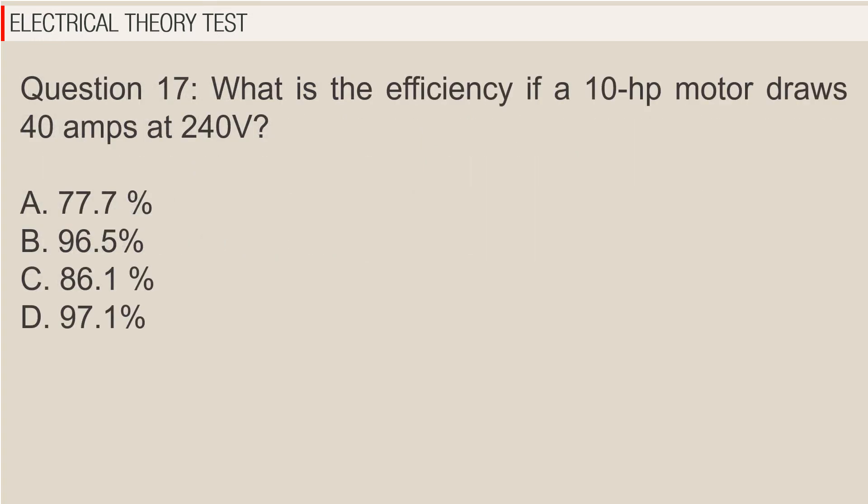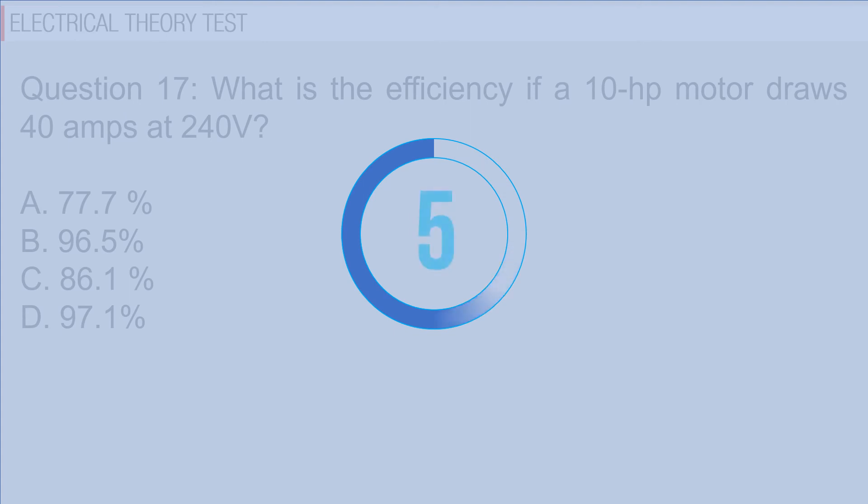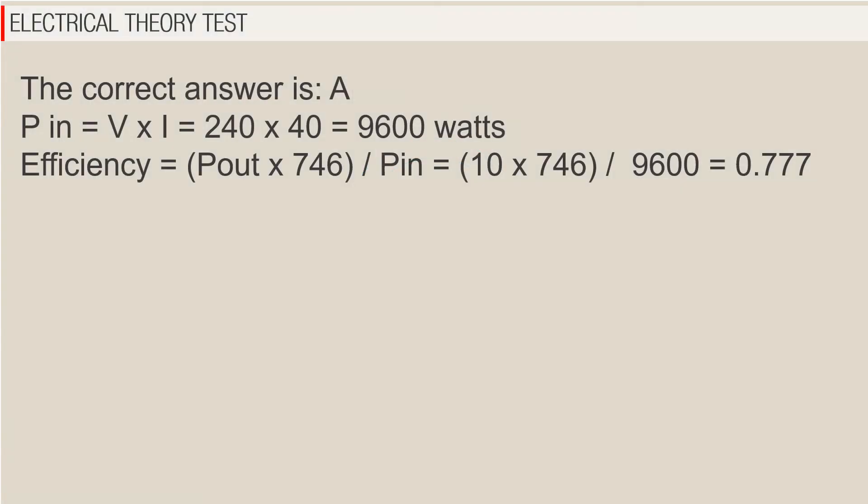Question 17: What is the efficiency if a 10 horsepower motor draws 40 amps at 240 volts? A. 77.7%, B. 96.5%, C. 86.1%, D. 97.1%. The correct answer is A. P in equals V times I equals 240 times 40 equals 9600 watts. Efficiency equals P out times 746 over P in equals 10 times 746 over 9600 equals 0.777.